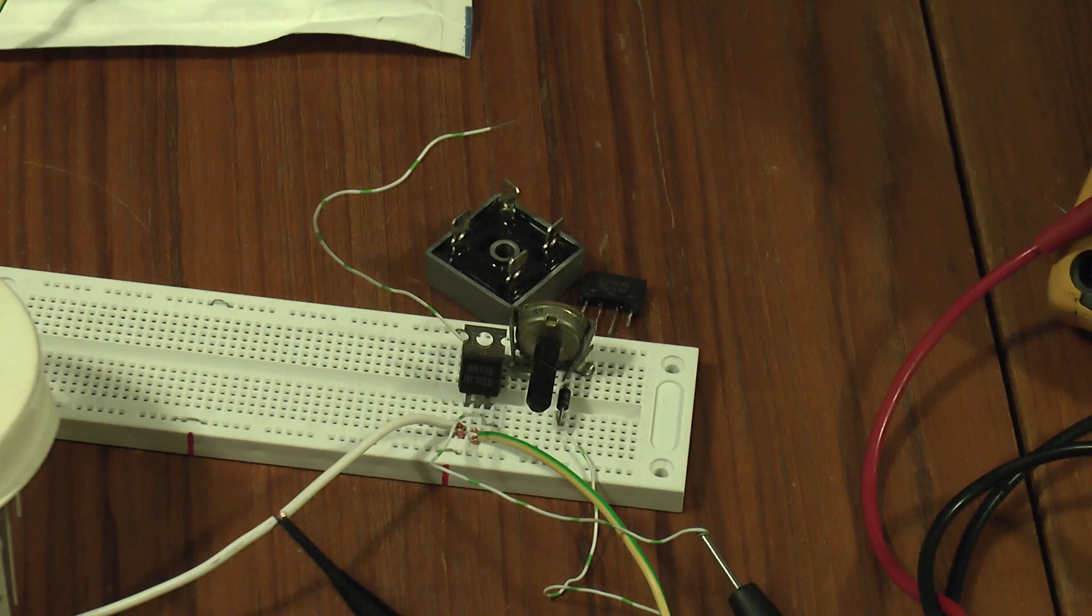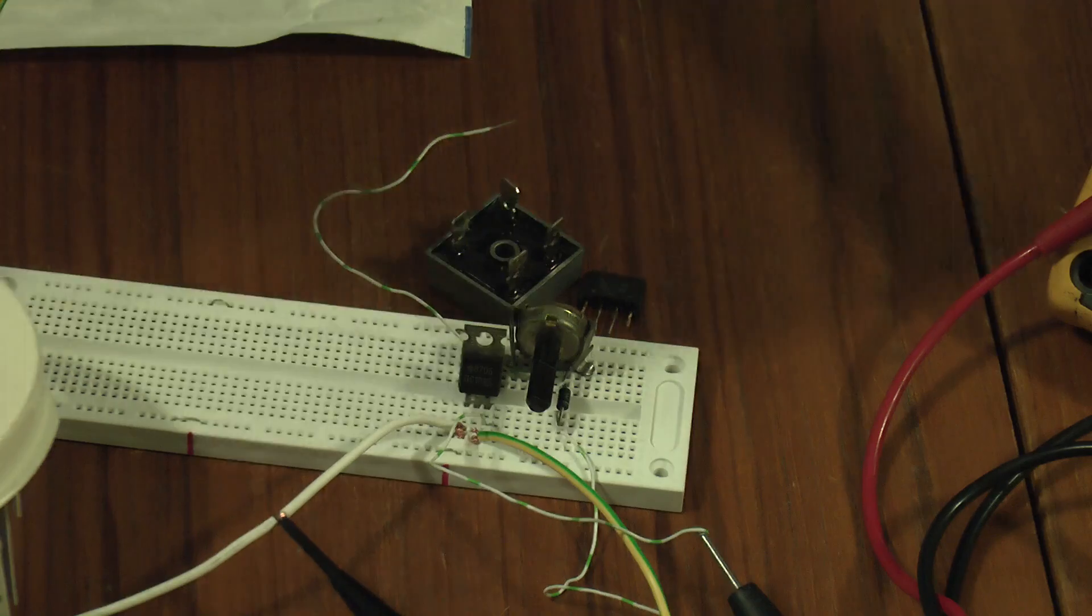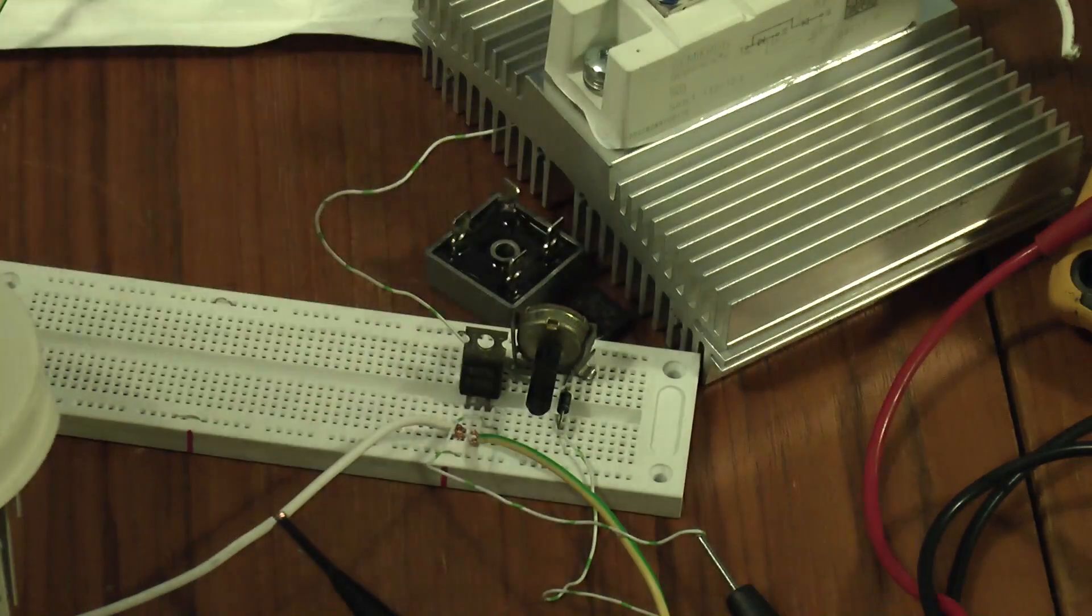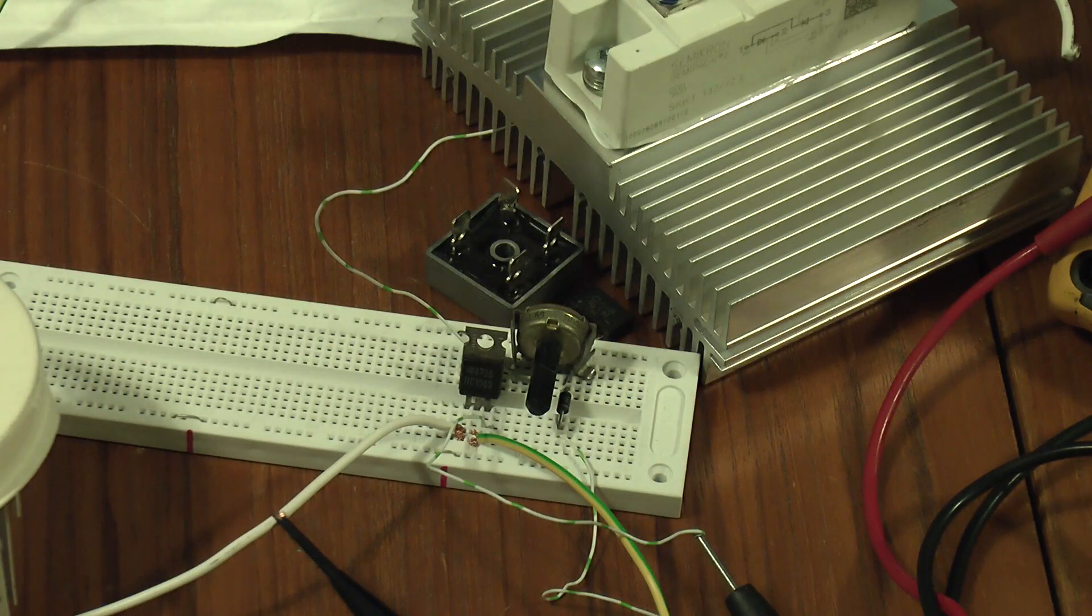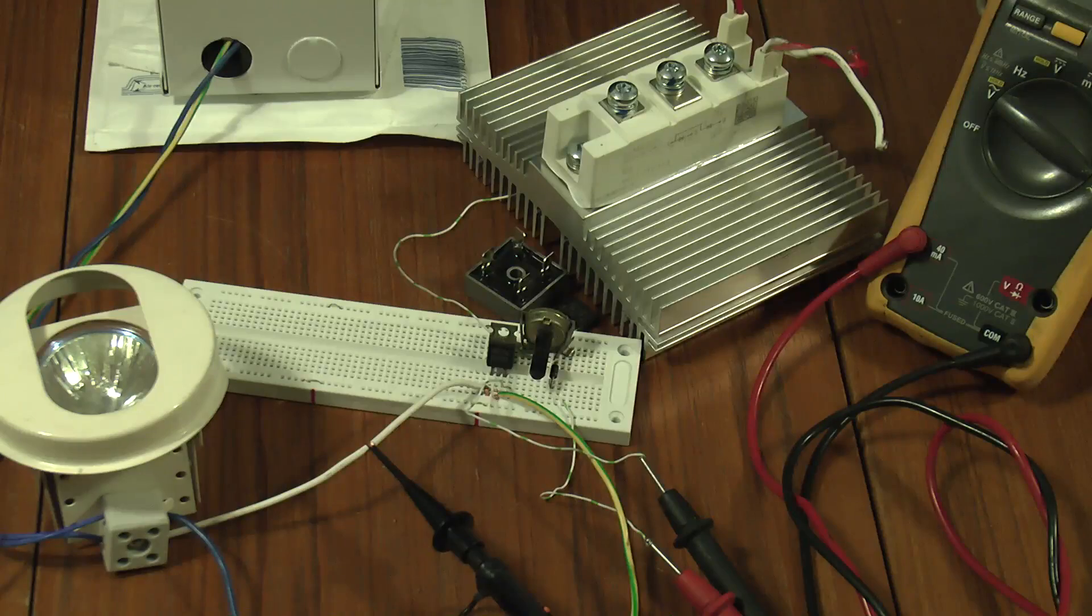But what if you want something like a 220 amp bridge rectifier? What are you going to do? Well, let's just say you want one of these 220 amp bridge rectifiers. And you haven't got any 220 amp diodes lying around. All you've got is a couple of these SCRs. Can you do it? Damn right you can do it.